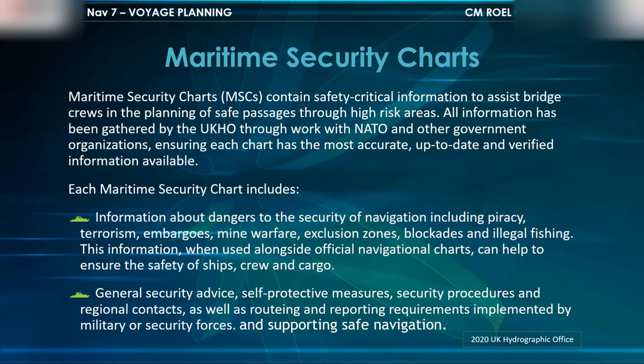Each Maritime Security Chart includes information about dangers to the security of navigation, including piracy, terrorism, embargoes, mine warfare, exclusion zones, blockades, and illegal fishing. This information, when used alongside official navigational charts, can help to ensure the safety of ships, crew, and cargo.